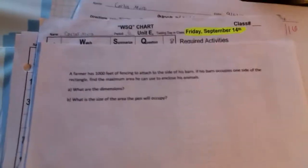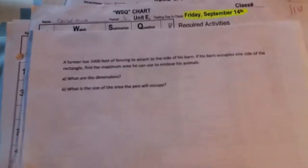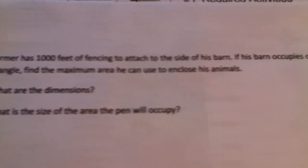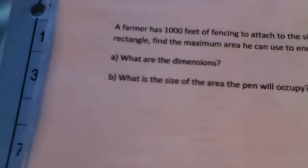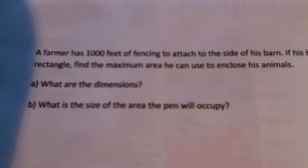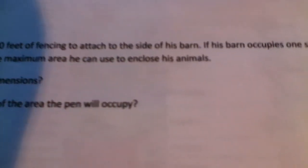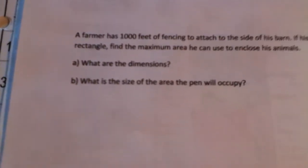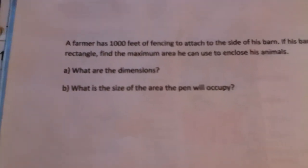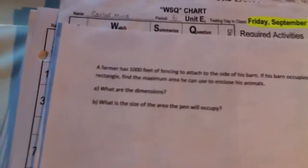So pretty much we're trying to find the maximum area. Well, let's start. A farmer has a thousand feet of fencing to attach to the side of his barn. If his barn occupies one side of the rectangle, find the maximum area he can use to enclose his animals. A, what are the dimensions? And B, what is the size of the area the pen will occupy?